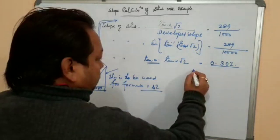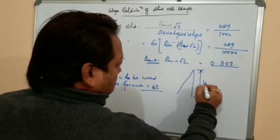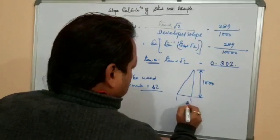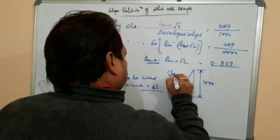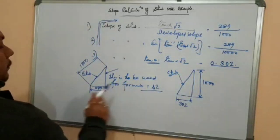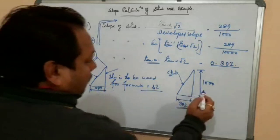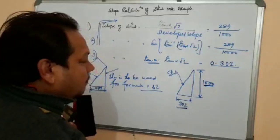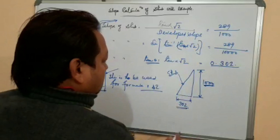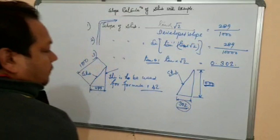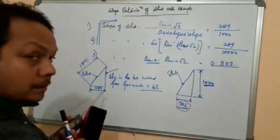For formula three: mark 1000 along the plumb line (vertical direction) rather than along the staff. Then measure horizontally from that point to the corresponding point on the staff — that distance is 302. So note: for formulas one and two you measure 1000 along the staff heel, but for formula three you measure 1000 along the plumb vertical. These two are different measurement procedures.